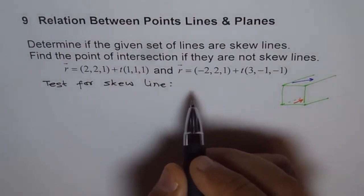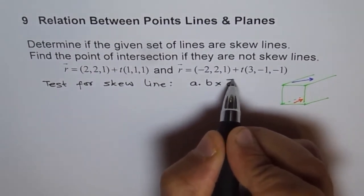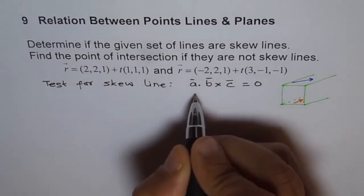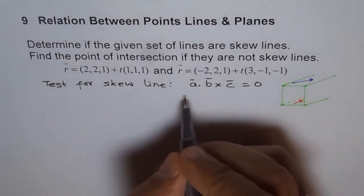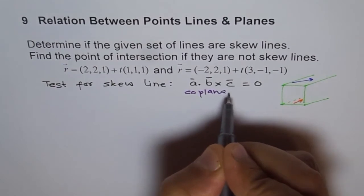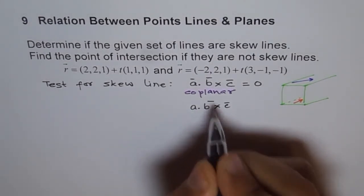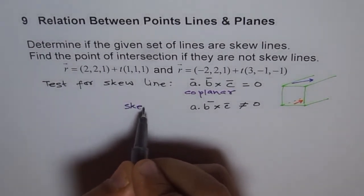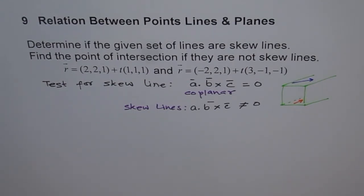The test for skew lines is the scalar triple product. If A, B, and C are three different vectors, then we test A · (B × C). If this is equal to zero, that means the lines are coplanar — not skew. If A · (B × C) is not equal to zero, then we have skew lines. This is the acid test. We will use a matrix to compute the scalar triple product.